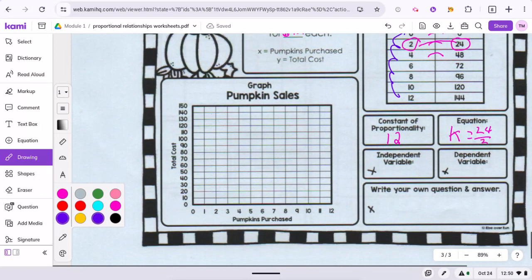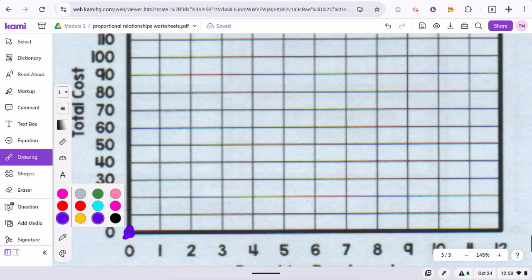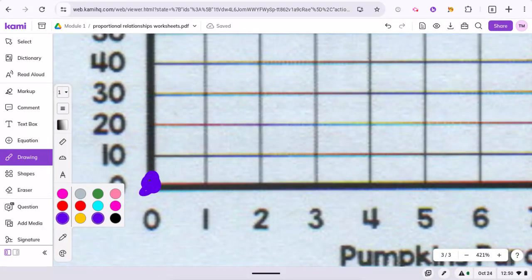And then you can graph it down here. So it would be 0, 0. Now 24 might be a little difficult to find. But you have 20 here.